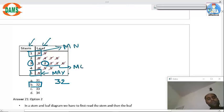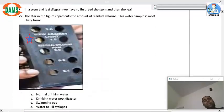Yes, you can have all such forms of questions. The star in the figure represents the amount of residual chlorine. This water sample is likely from... So you can see it is around one, so swimming pool. It is one. Kill cyclops, five.